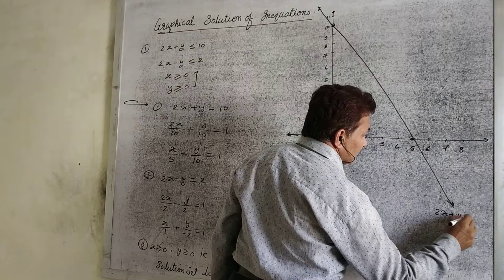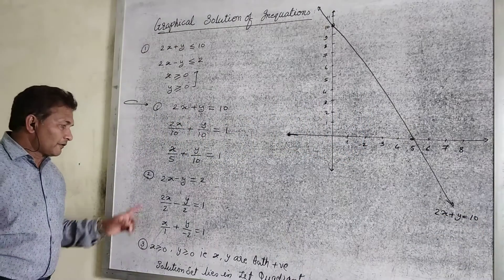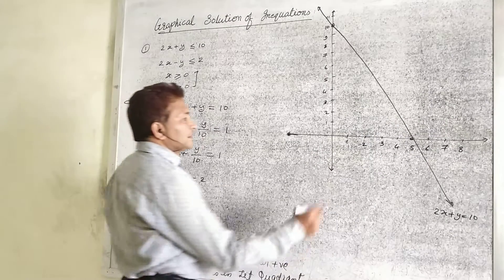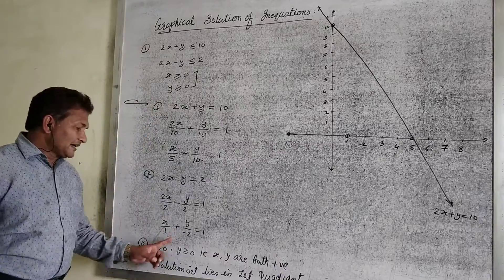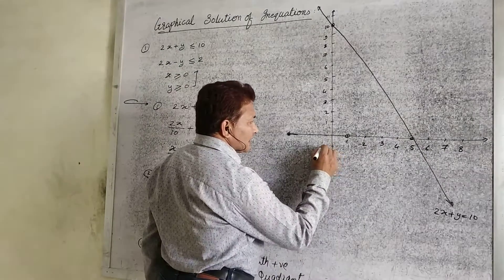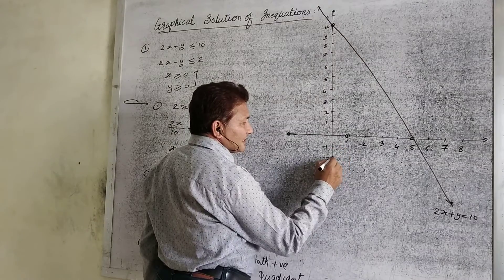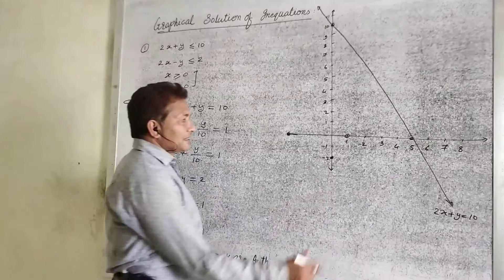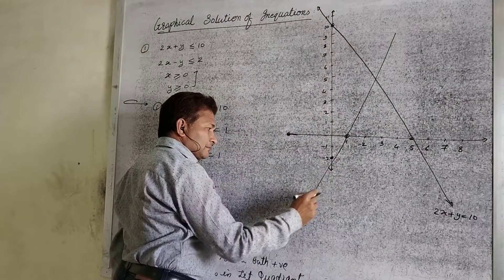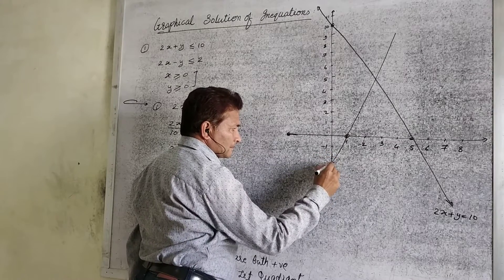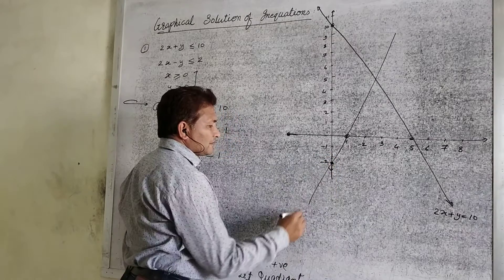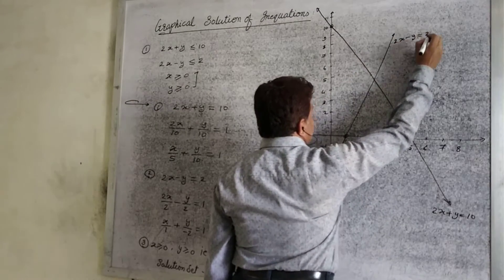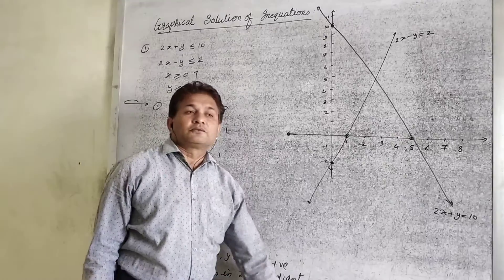Write down the equation for the first line: 2x plus y equal to 10. Next, draw the line for the second equation. For the second equation, the line cuts the x-axis at 1 and the y-axis at minus 2. So here the intercept is negative, giving points at 1 and minus 2. Draw the line passing through these two points. The second line has the equation 2x minus y equal to 2. So we have drawn two lines.